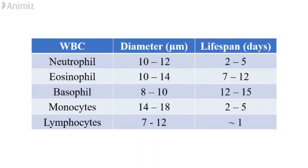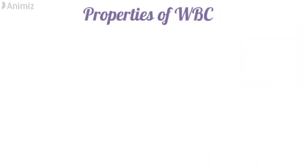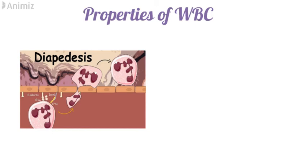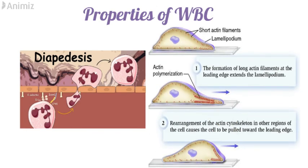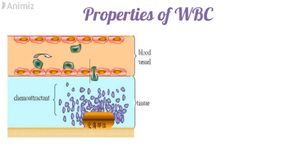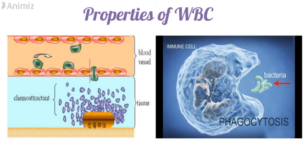There are some characteristic properties shown by WBC cells. The first is diapedesis — the process by which WBC cells are able to squeeze through narrow blood vessel spaces. The second is amoeboid movement: with the help of short actin filaments, neutrophils, monocytes, and lymphocytes show amoeboid movement by protrusion of cytoplasm and change in shape. The third property is chemotaxis — the attraction of a WBC towards injured tissue by chemical substances released at the site of injury, called chemoattractants. The fourth property is phagocytosis, where neutrophils and monocytes engulf foreign bodies and destroy them.